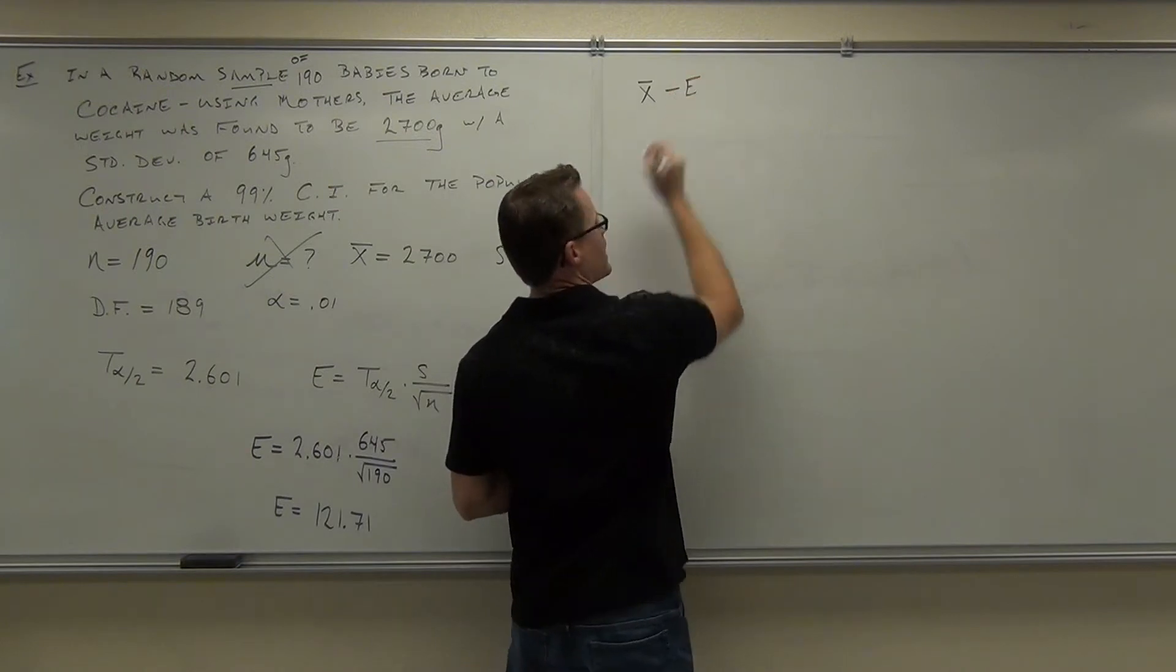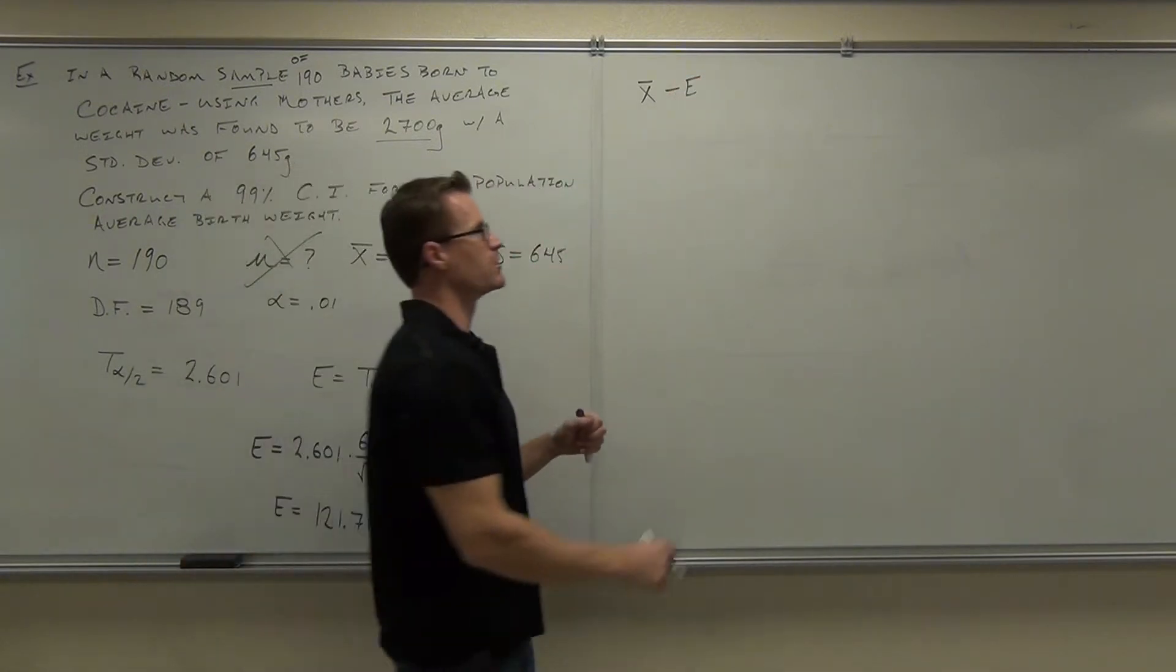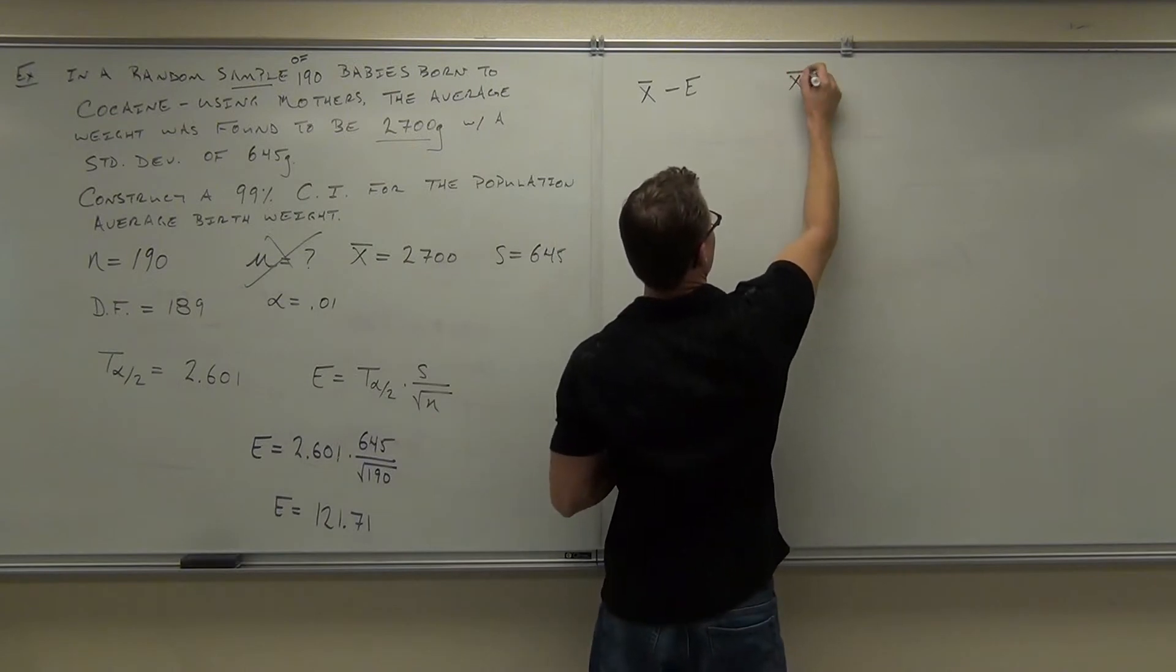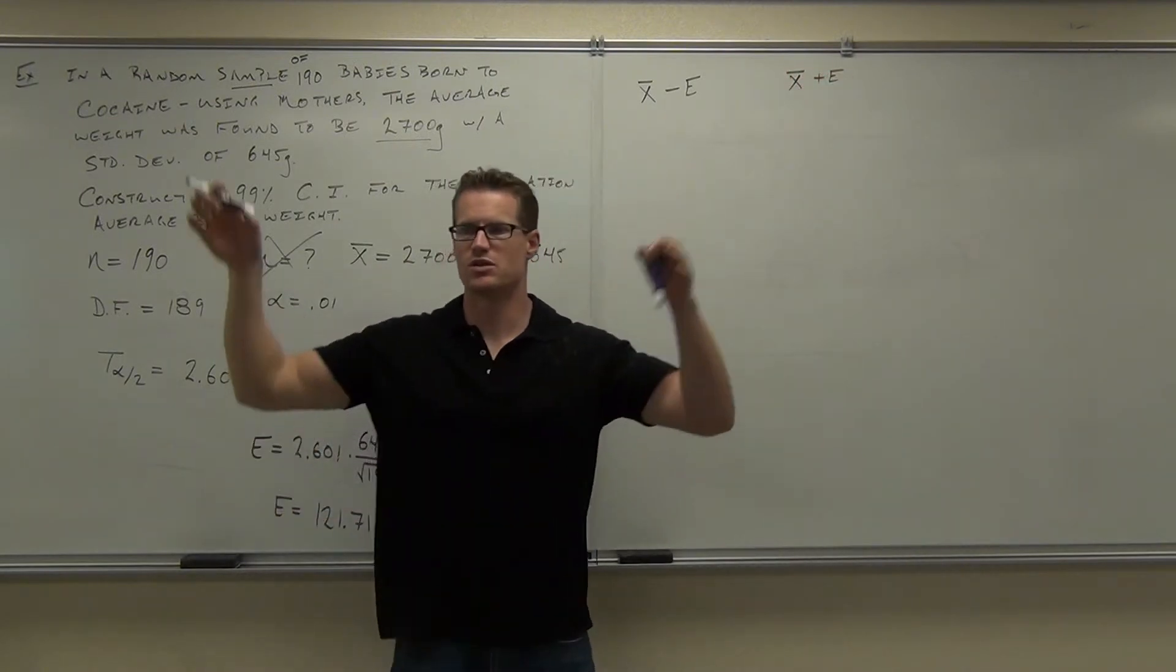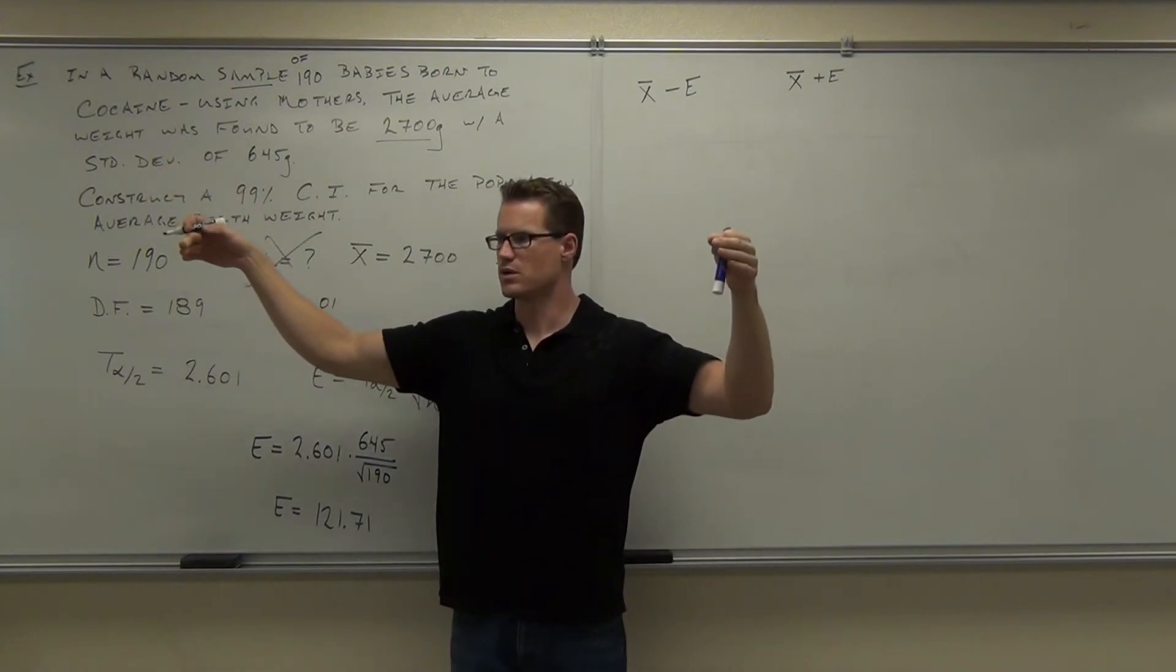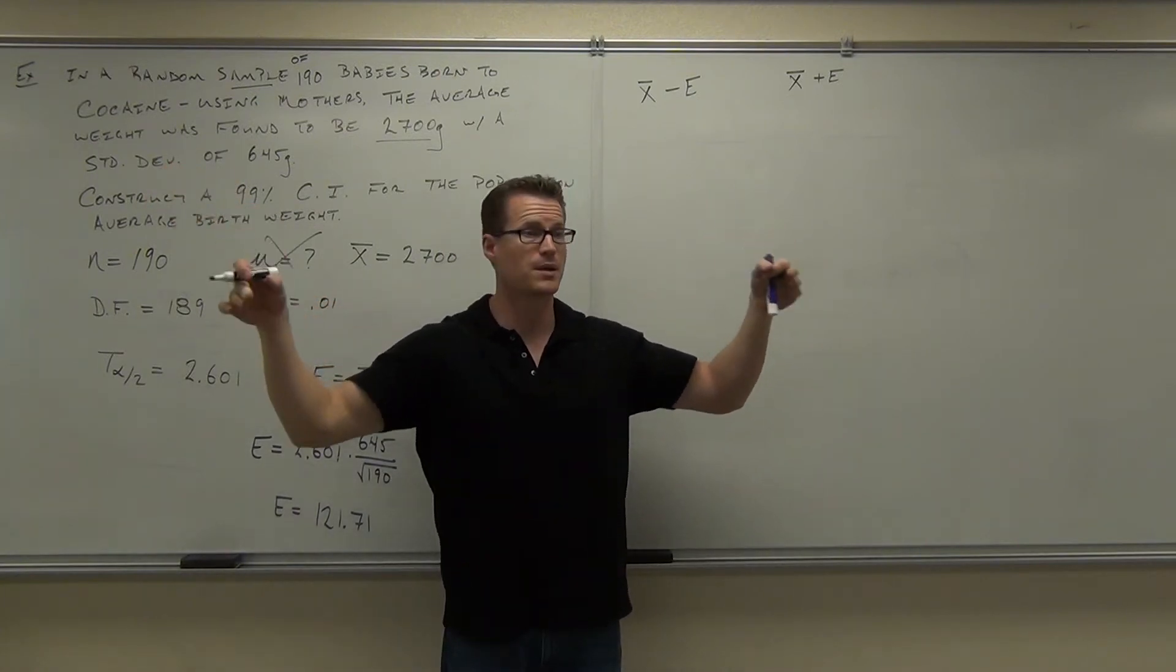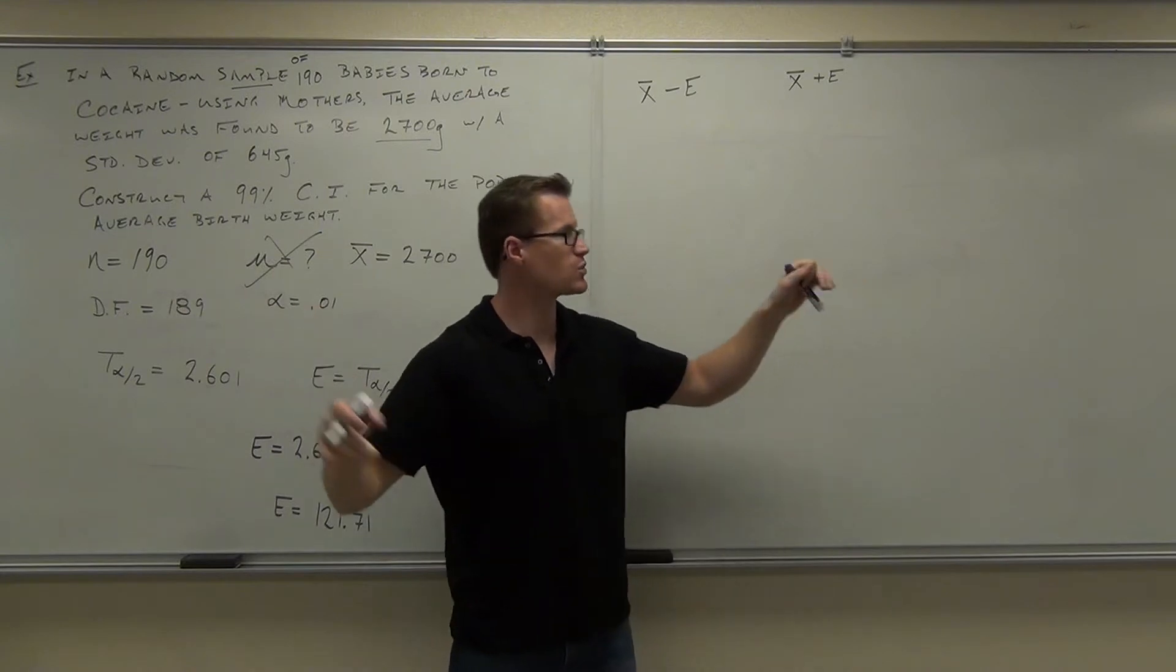Minus E, which is the maximum difference between your point estimate and your population parameter. So that gives you a range that gives you the furthest bounds that you could be away from your population parameter, which is in this case, what goes in the middle of this?